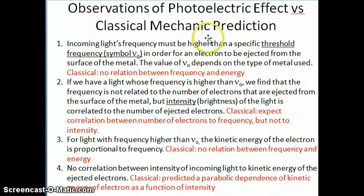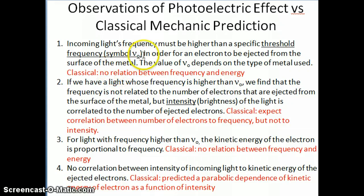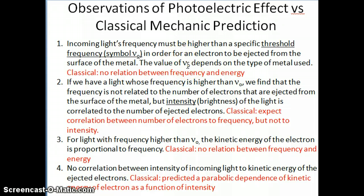That frequency is called the threshold frequency. It's given the symbol ν₀ — nu-naught. Nu is the symbol for frequency, and naught here is used to denote this threshold frequency quantity. The value of ν₀ depends on the type of metal you use. For example, if you're using sodium, maybe a certain type of light will eject electrons from sodium, but a different type of light will be needed for potassium. So this ν₀ value is not the same for all metals.